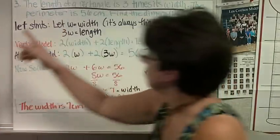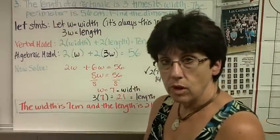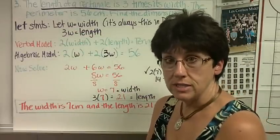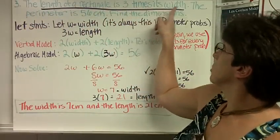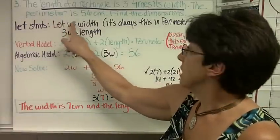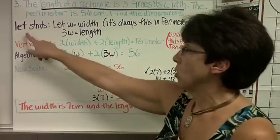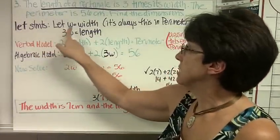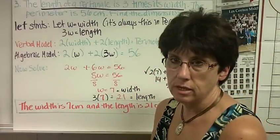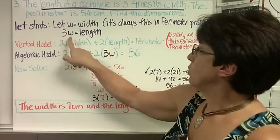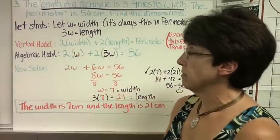Example 3. Now, this is a different type of problem. The other two were similar. This is a perimeter problem. It's a little bit different, but the good news is we always set them up the same. The length of a rectangle is 3 times its width. The perimeter is 56 centimeters. Find the dimensions. That means the length and the width. So we always set up our let statements for perimeter problems like this. Let W equal width. It's always this in perimeter. Really, it's not. 99.9% of the time it is, though. Don't worry about the other percent. And what did we know about the length? The length of a rectangle is 3 times the width. So 3W equals length.